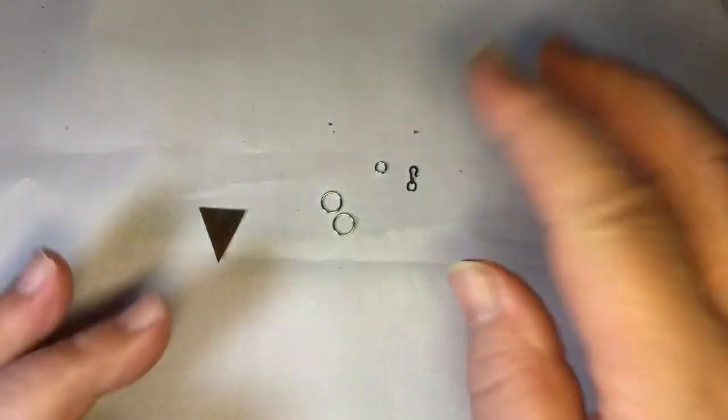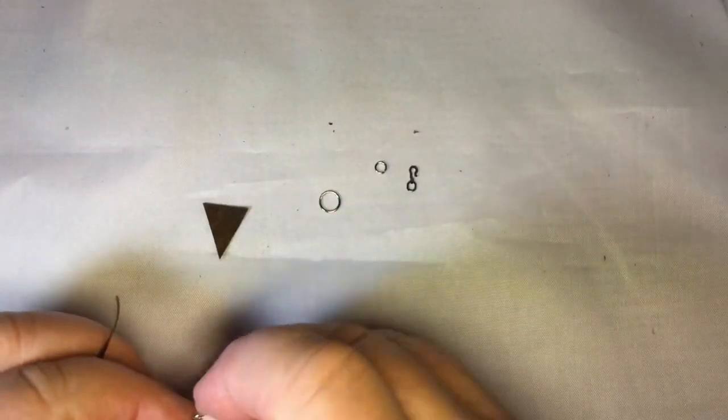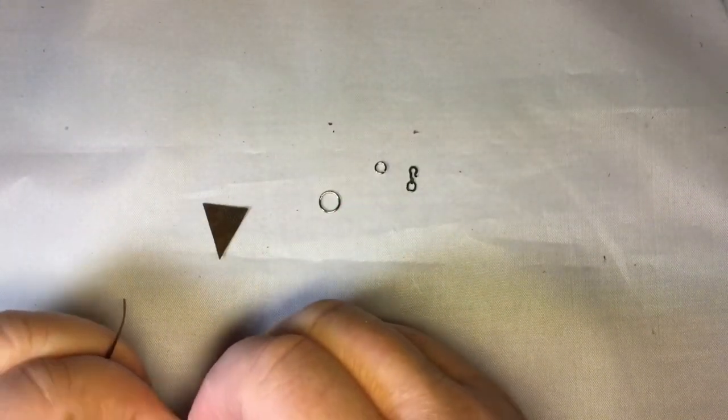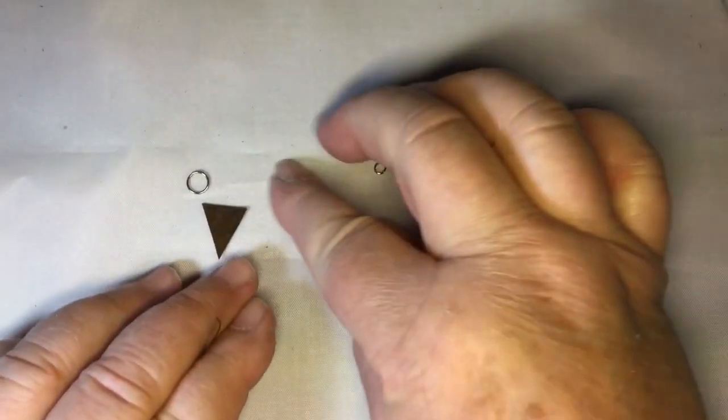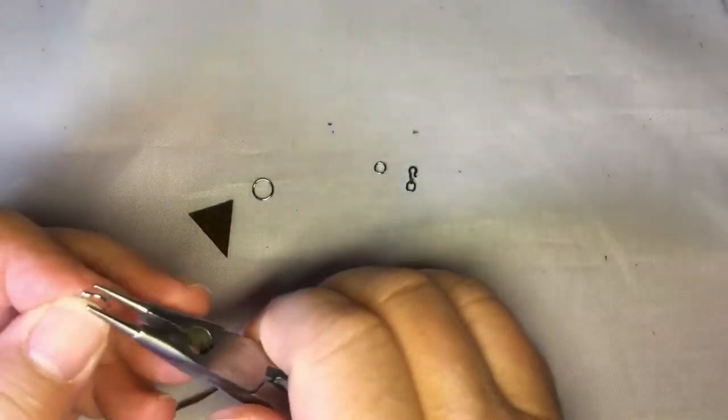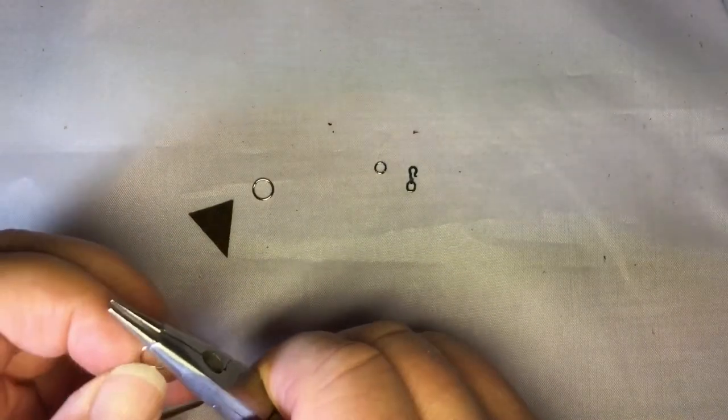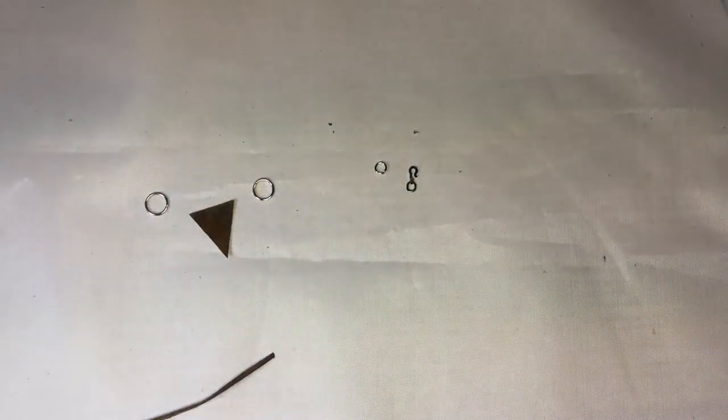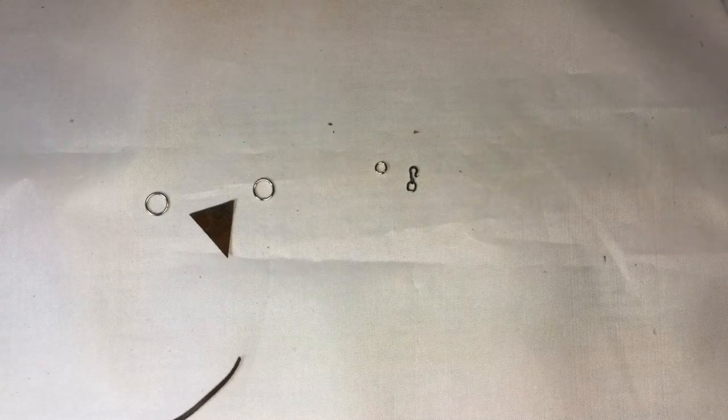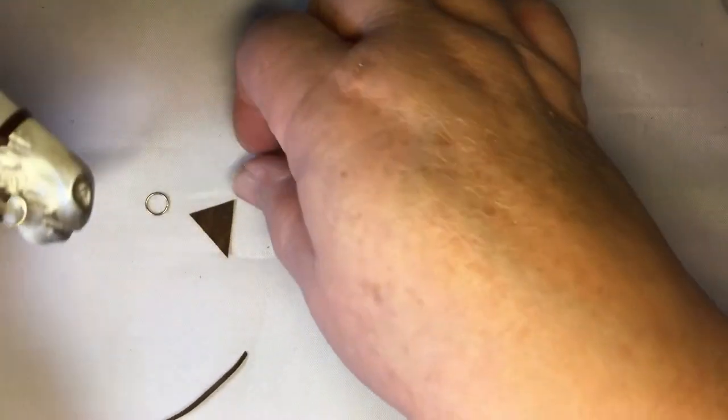Once you put the edge on it, it should work. All right, and then we're going to talk about jump rings. So these are the actual running rings that go attached to the rein.